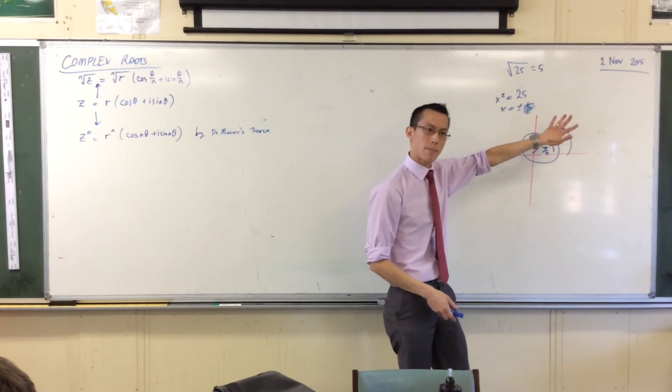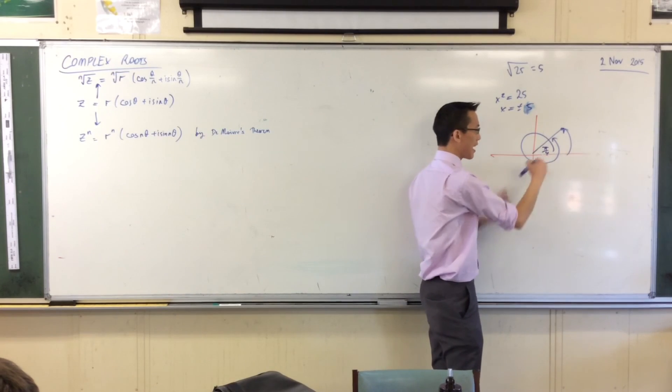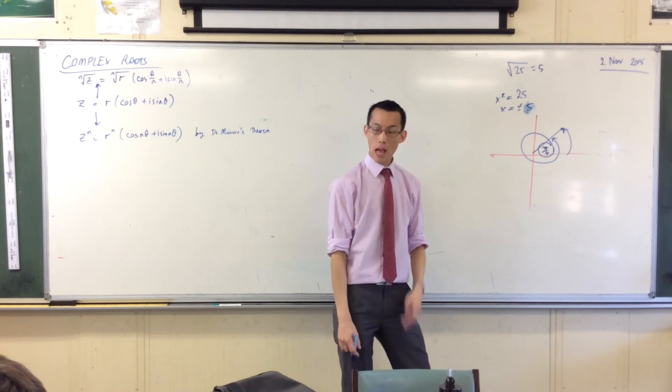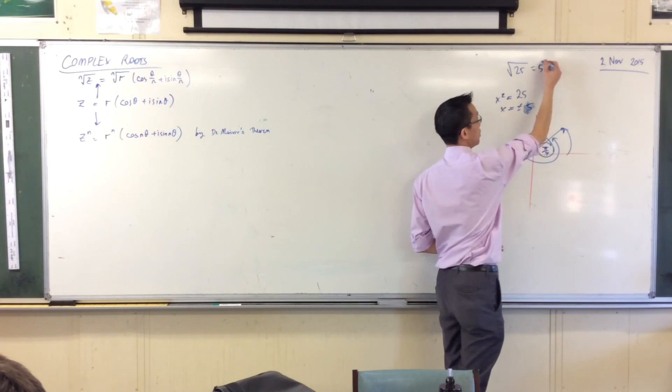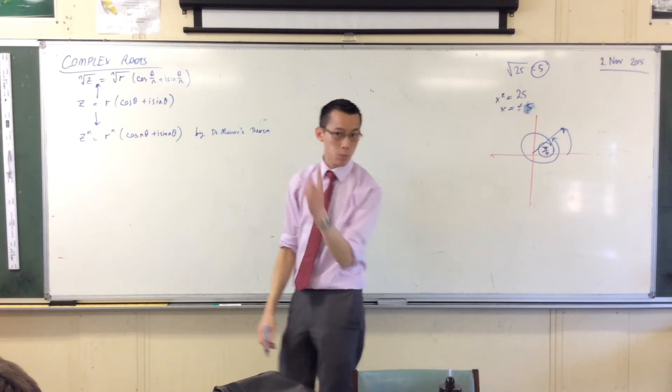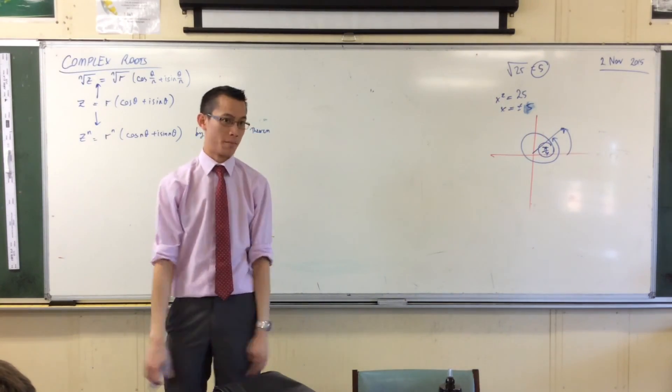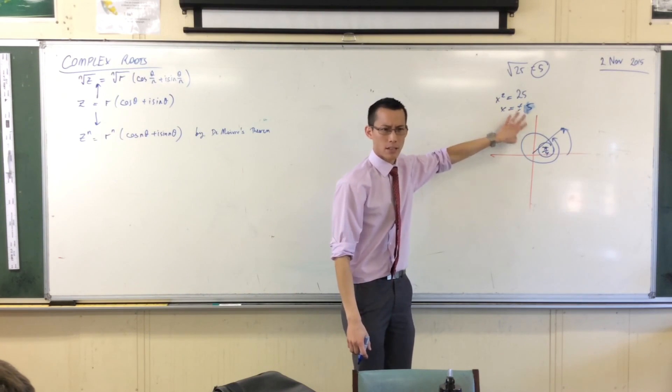So we have this non-unique representation. So just like I have a principal argument, I also have a principal square root. There's one which I consider like the main one, even though there are others sort of hanging around on the side.